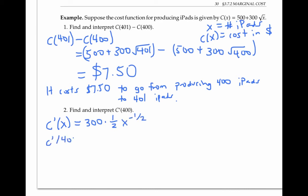So C'(400) is going to be 300 × (1/2) × 400^(-1/2), which simplifies to 300/(2√400), which is also 7.5 or $7.50 per iPad.